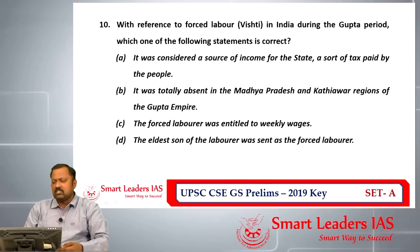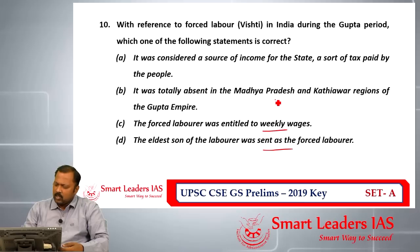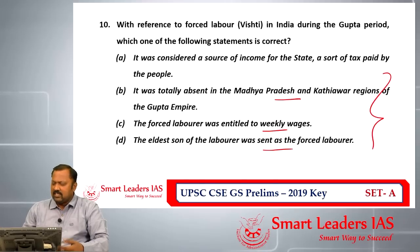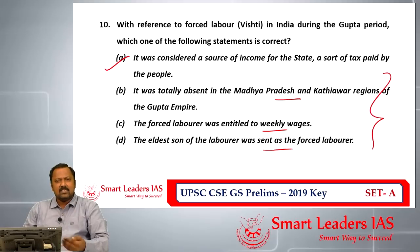Question number ten is about Vishti — forced labor in ancient India during the Gupta period. The statement that it was considered a source of income for the state, a sort of tax paid by the people, is the most defensible. The other statements — about the eldest son being sent as forced labor, or forced laborers receiving weekly wages — are not found in standard references. So the answer for question number ten is A.